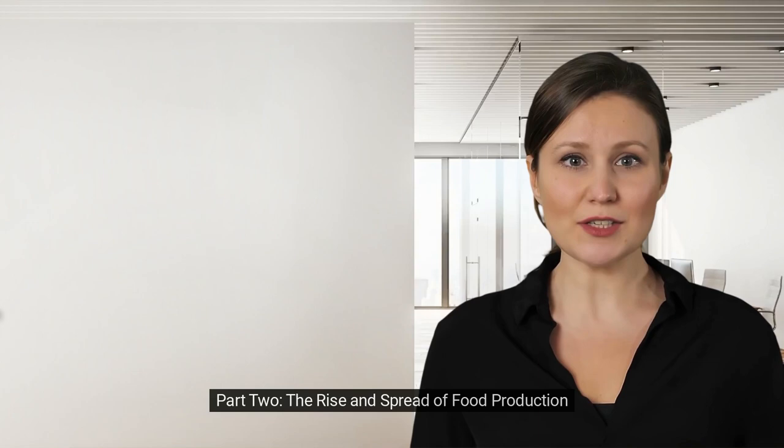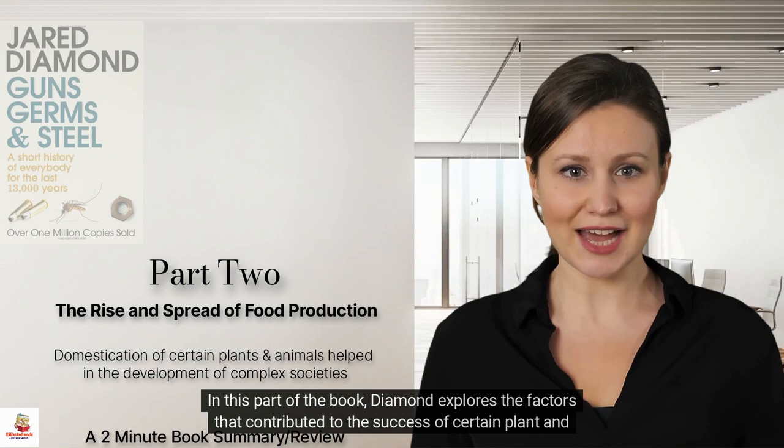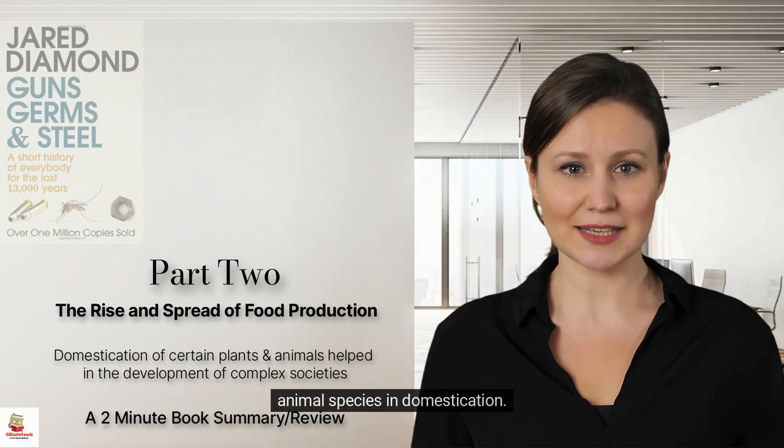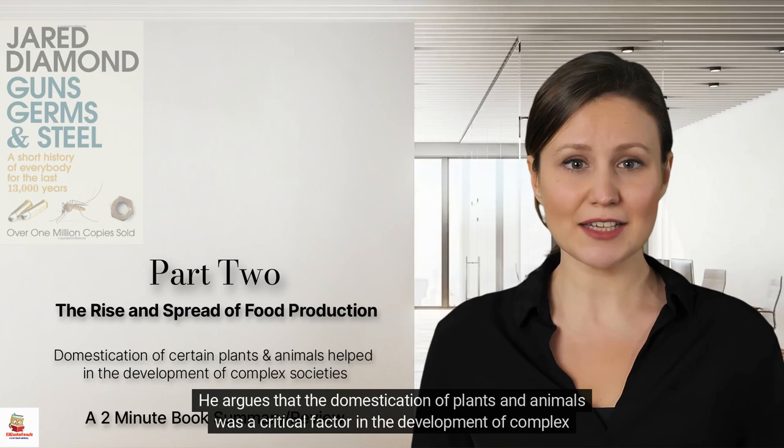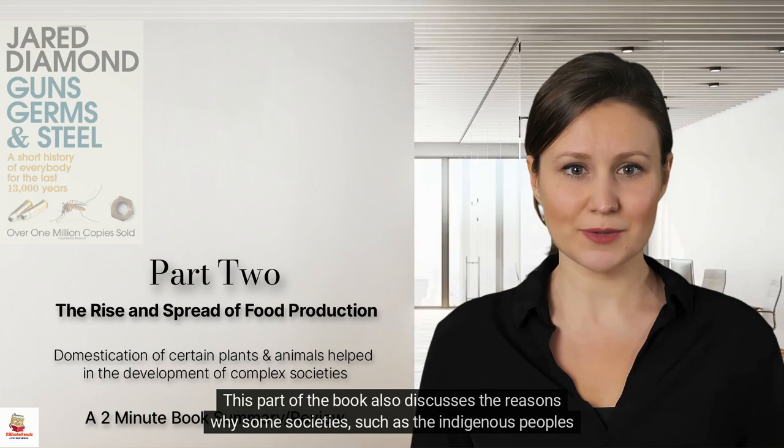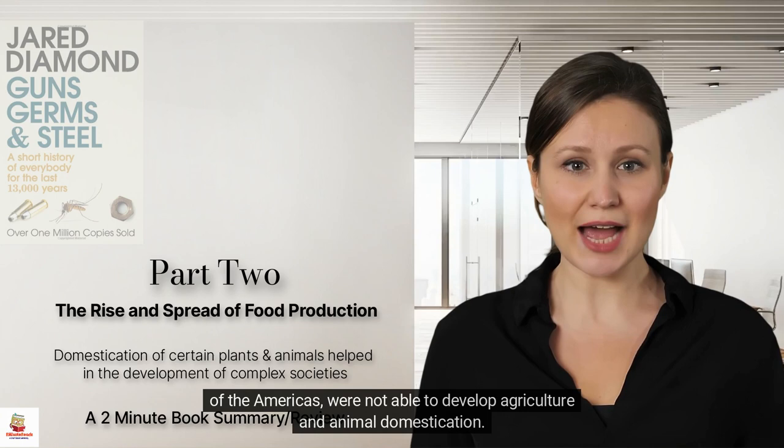Part 2: The Rise and Spread of Food Production. In this part of the book, Diamond explores the factors that contributed to the success of certain plant and animal species in domestication. He argues that the domestication of plants and animals was a critical factor in the development of complex societies. This part also discusses the reasons why some societies, such as the indigenous peoples of the Americas, were not able to develop agriculture and animal domestication.